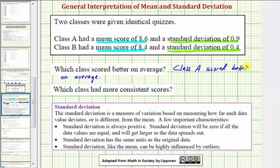Let's look at our notes below on standard deviation. The standard deviation is a measure of variation based on measuring how far each data value deviates or is different from the mean.